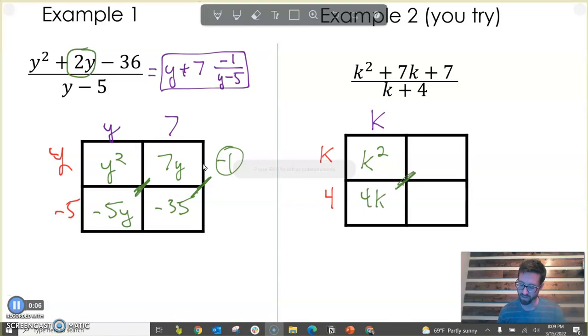And then we know that these two boxes right here need to combine to make 7k. Therefore, that box must be a 3k right there. Then 3k divided by k gives us 3. And then 3 times 4 gives us 12.